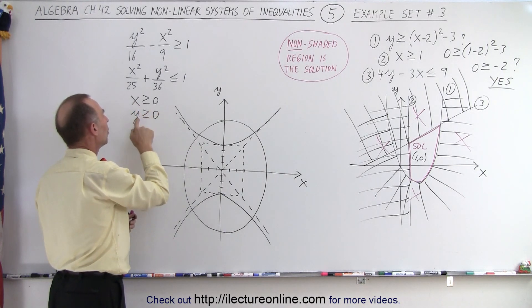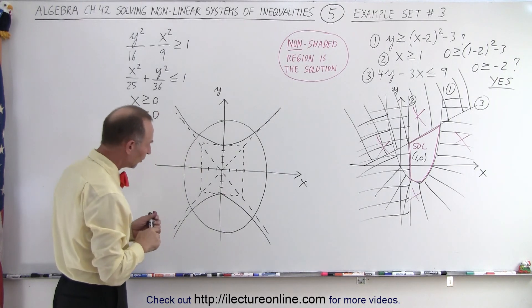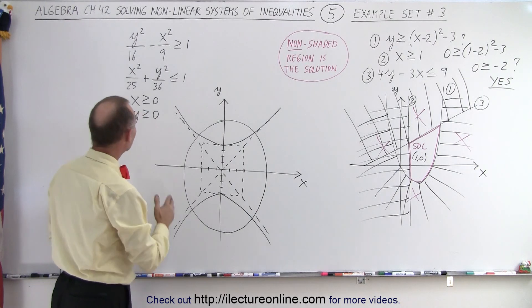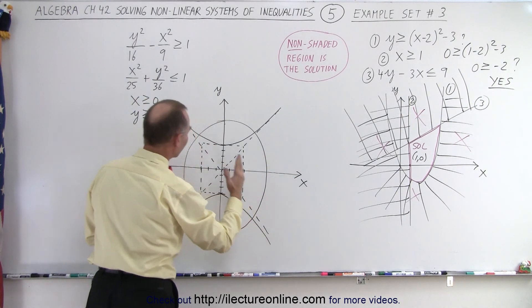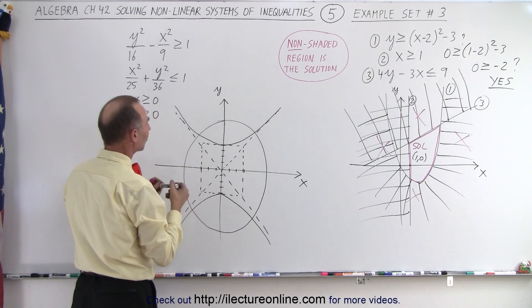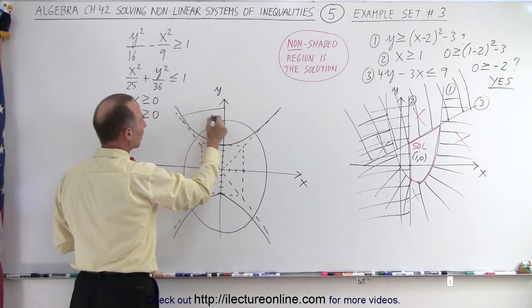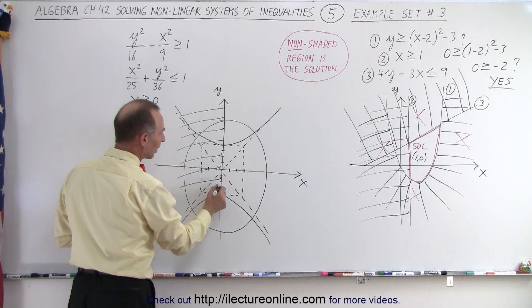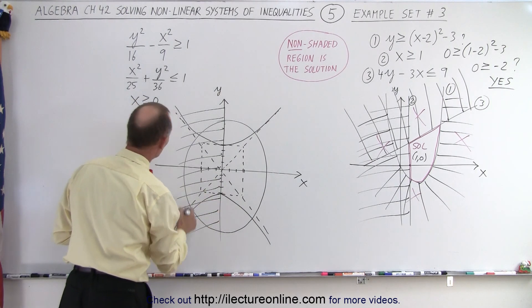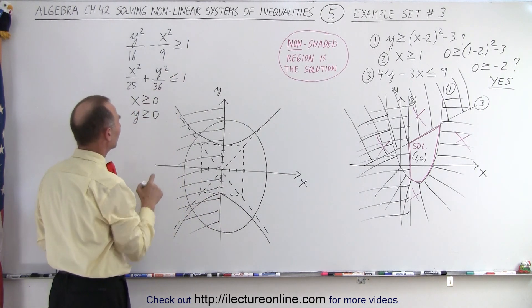Here we have four inequalities. And let's start with the easy ones. X must be greater or equal to zero. Y must be greater than or equal to zero. So X greater than zero is everything to the right of the Y axis. Everything to the left of the Y axis does not count. So we can get rid of that. Notice that the line itself is part of the solution because we have the equal symbols.